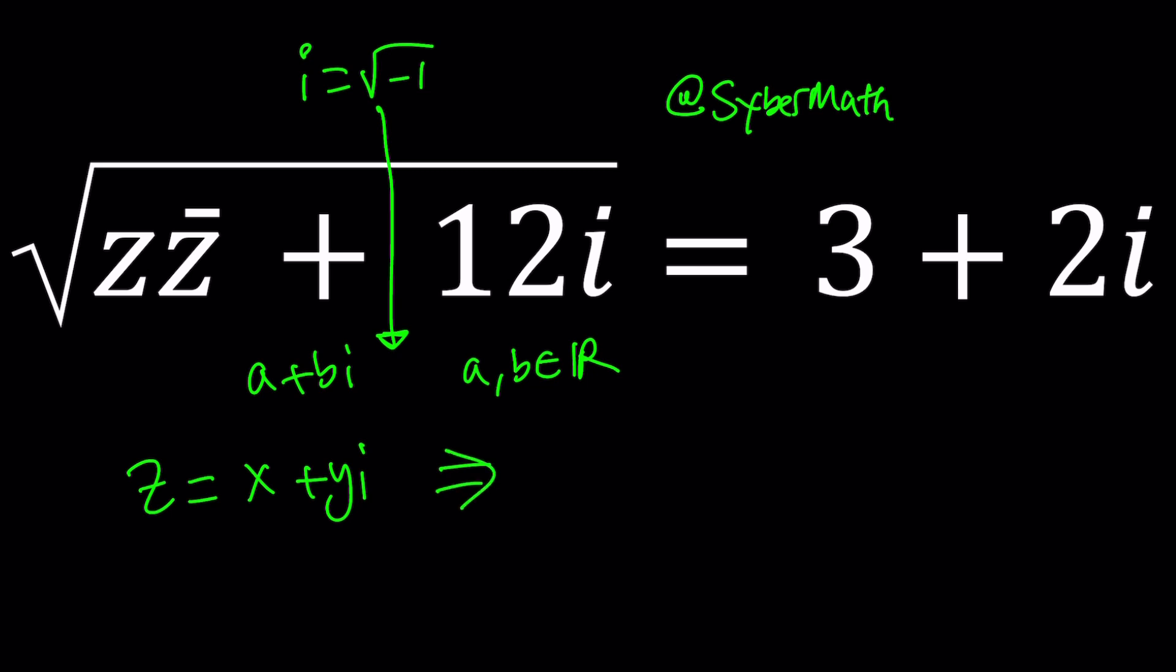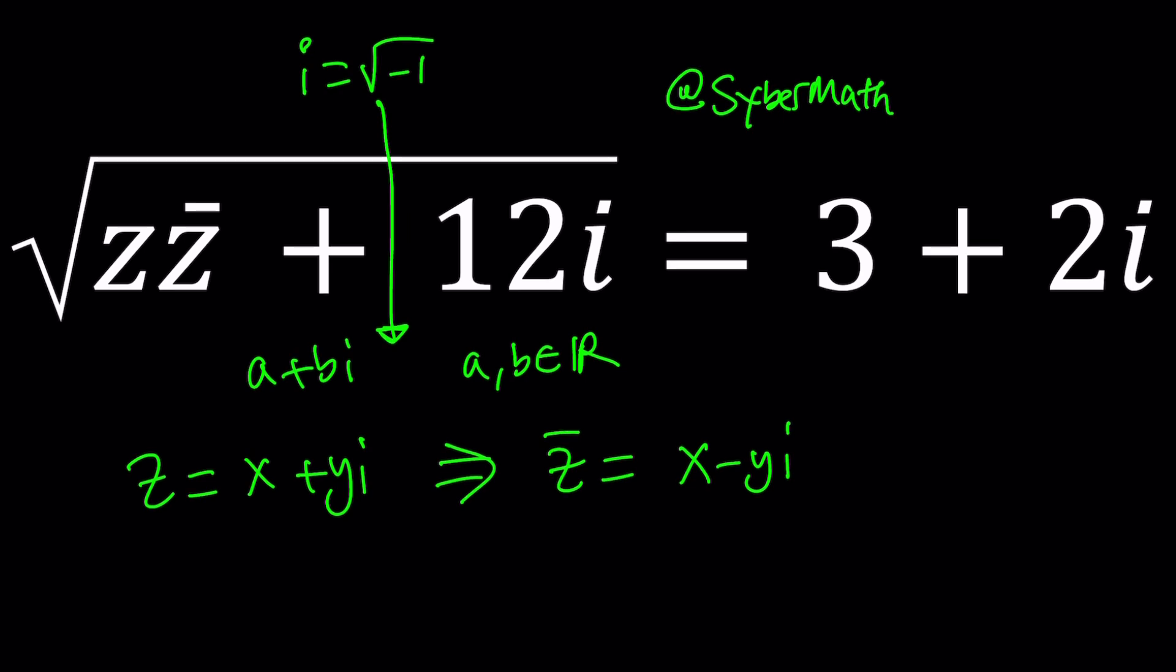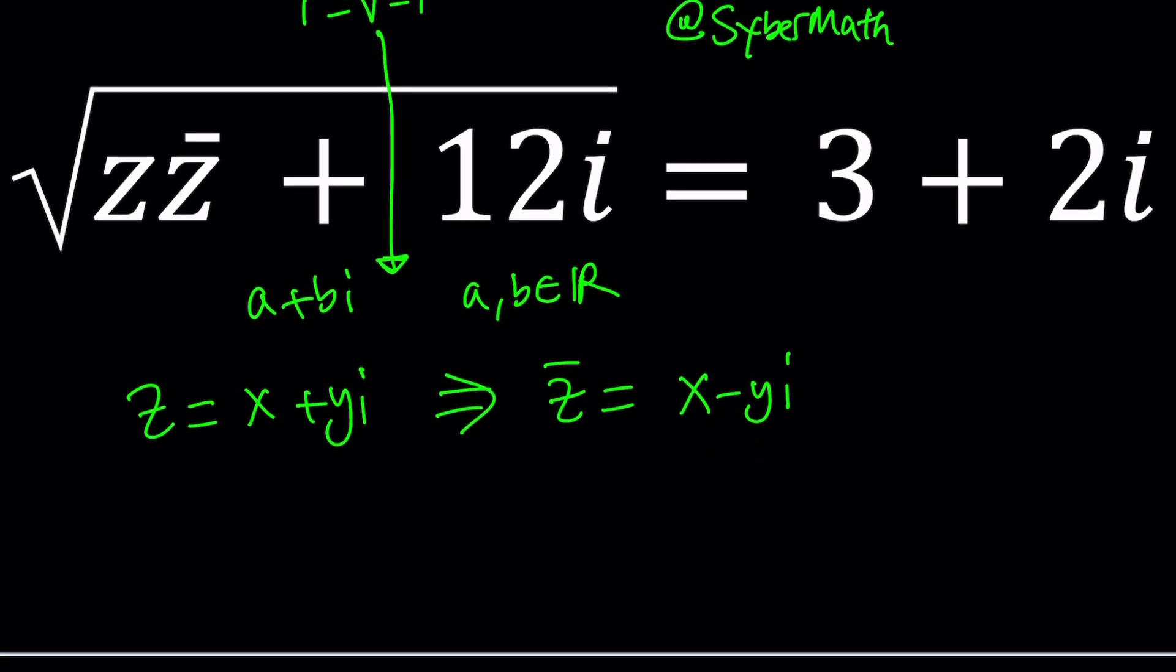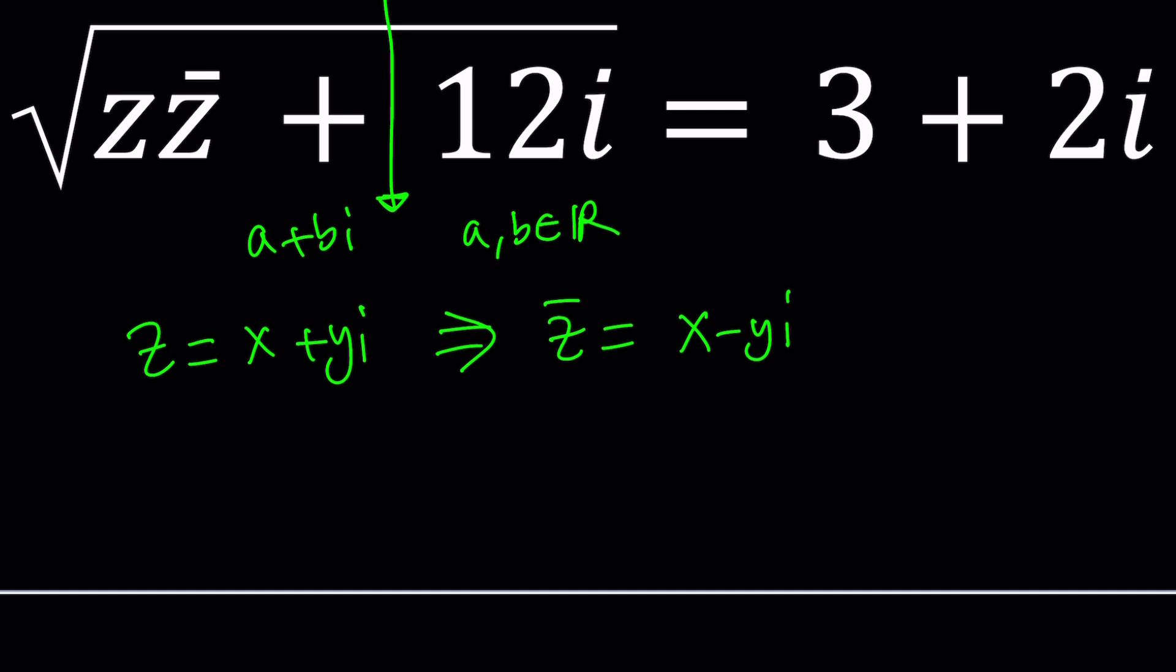This implies that z bar is x minus yi. So when you multiply z and z bar, you get a real number all the time. In that sense z bar is unique. So now if you plug it in, x plus yi multiply by x minus yi and then plus 12i and the square root of that is going to equal three plus two i. What's the next step? We have a radical. We need to get rid of the radical. So let's square both sides.